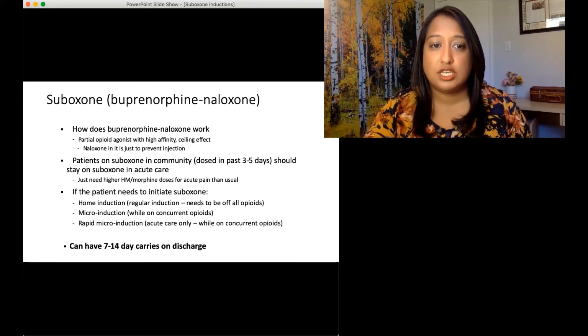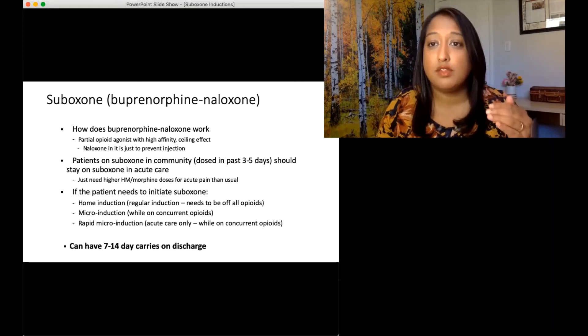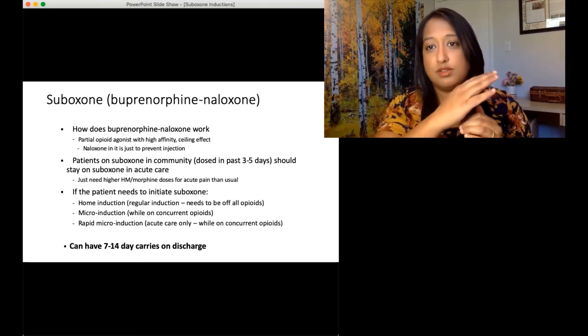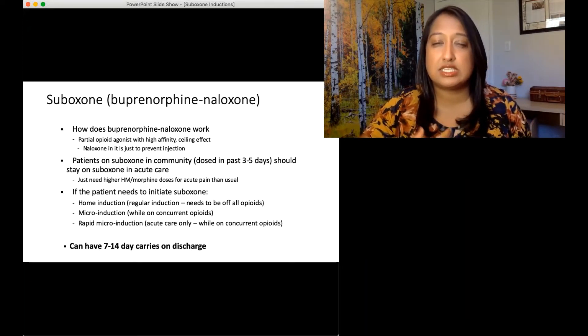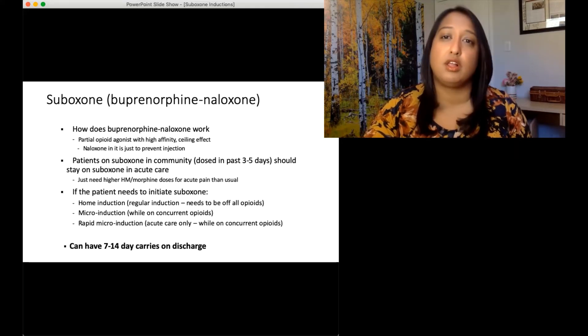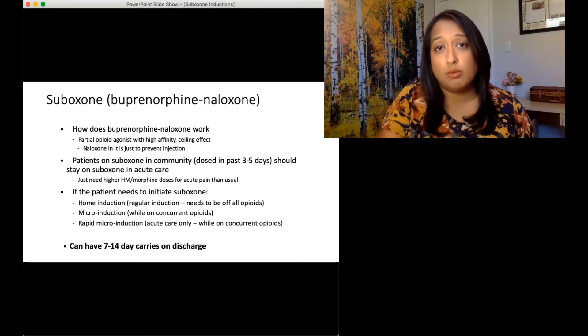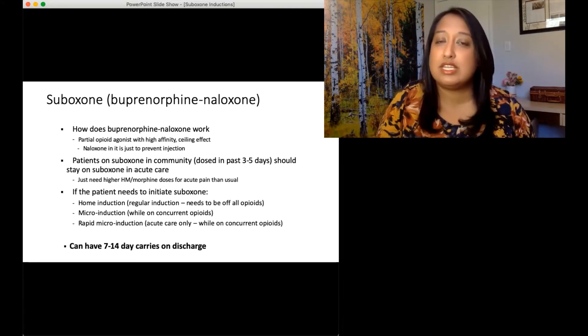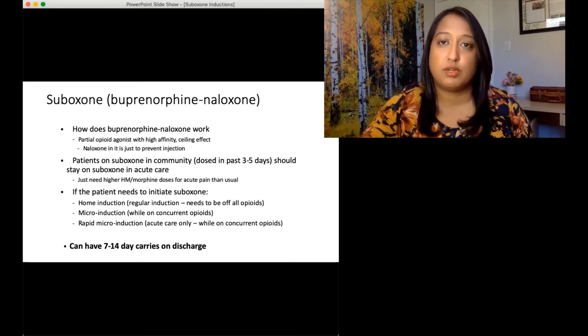If the patient needs to initiate Suboxone, there are lots of different ways to do it. The reason Suboxone is tricky to initiate is that the buprenorphine has such a high affinity to the opioid receptors that if there's other opioids on board, so hydromorph or fentanyl, the buprenorphine comes and it kicks those other opioids off of the receptors and that causes what we have termed precipitated withdrawal, which is this instant severe very bad opioid withdrawal. We want to avoid that at all costs.